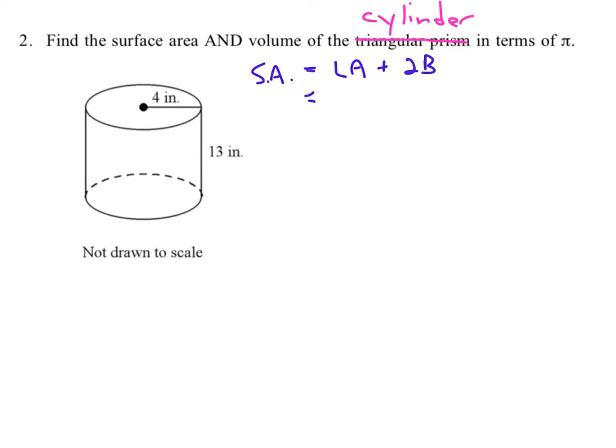And what's the formula for the lateral area for a cylinder? It is going to be the circumference, which by the way, the circumference can be found by having 2πr, times the height of it, which is given. Now, two times the base.